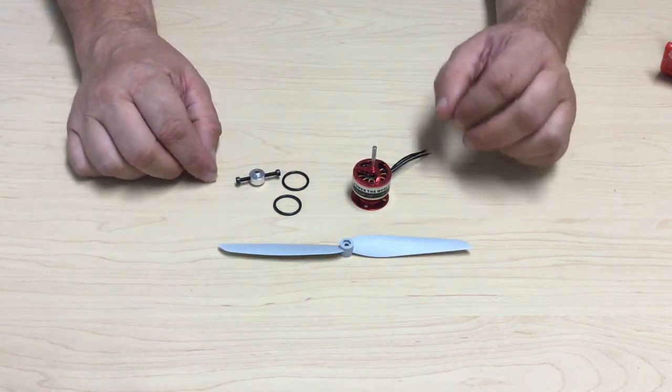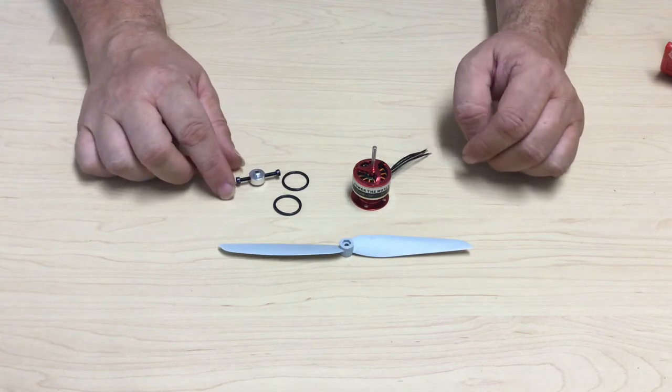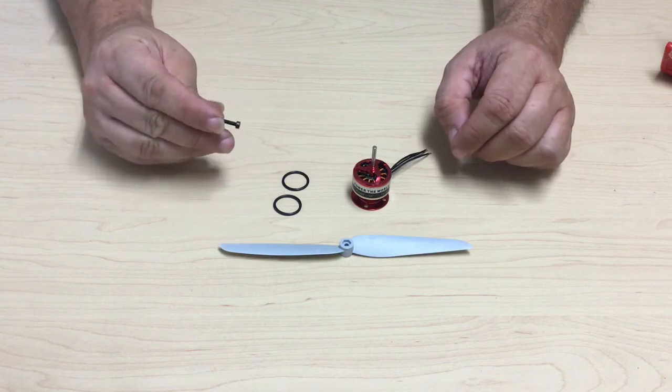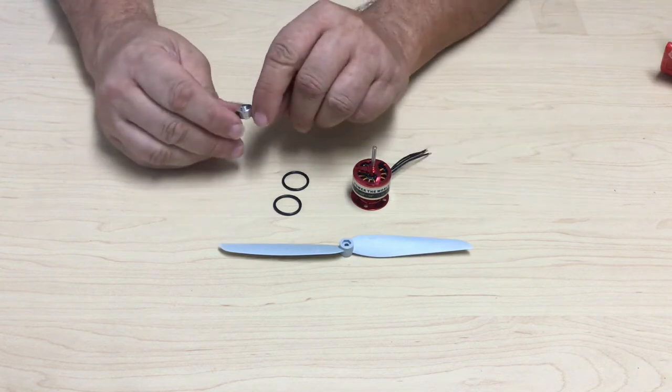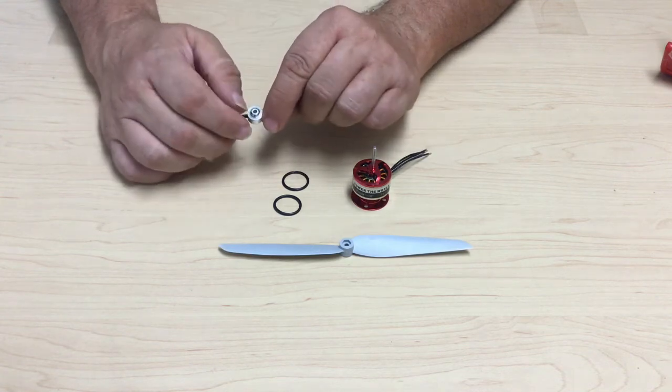Now, we're going to put the prop on the prop saver before we put the prop saver on the motor shaft. Pick up the prop saver and you'll notice that one side of the prop saver is narrower than the other side.